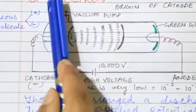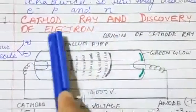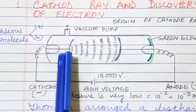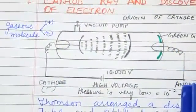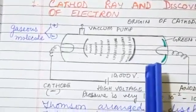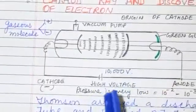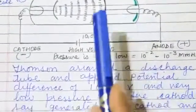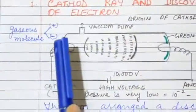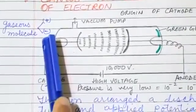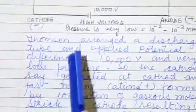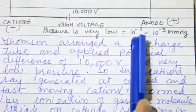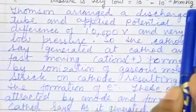First discovery is discovery of electron, cathode ray and discovery of electron by J.J. Thompson. He took this discharge tube and arranged two wires, one is cathode and one is anode. He gave the potential difference of 10,000 volt and pressure is 10 to the power minus 2 to 10 to the power minus 3 mm Hg.